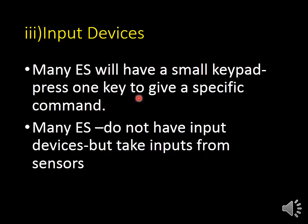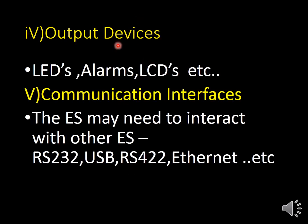The next component is input devices. Many embedded systems have a small keypad — you press a key to give a specific command. Some embedded systems may not have input devices but take inputs from sensors. Output devices: if you want to display output, we can use LCDs, alarms, or LEDs. For example, in a fire alarm system, the alarm is the output. Communication interfaces: when interfacing through internet, LAN, or WAN, the embedded system needs to interact with other embedded systems using interfaces such as RS-232, USB, RS-422, and Ethernet.